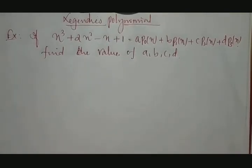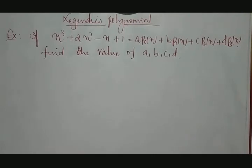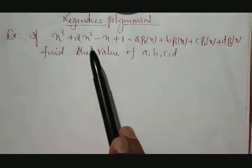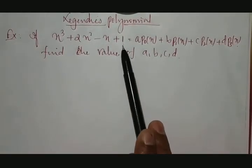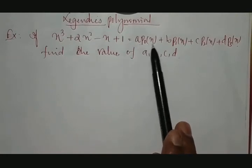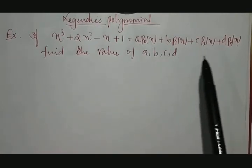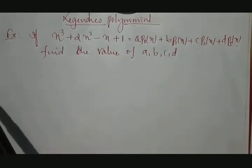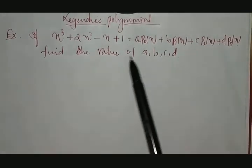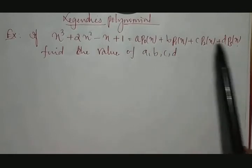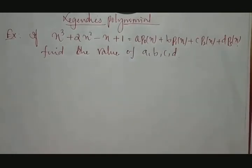Good morning students. This is Professor Kiran Poddar, Angadine Institute of Technology and Management, Belagami. Today we will discuss an example on Legendre polynomial. If x cube plus 2x square minus x plus 1 is equal to a into P0(x) plus b into P1(x) plus c into P2(x) plus d into P3(x), we need to find out the values of a, b, c, d — the coefficients of Pn(x).